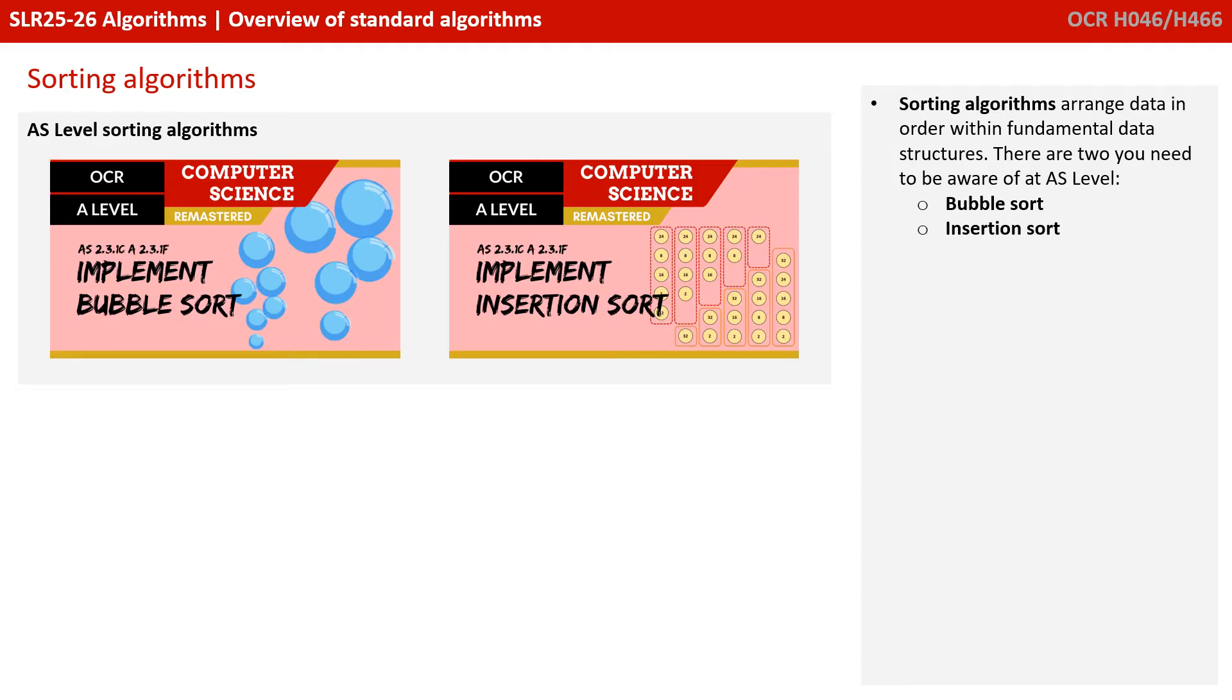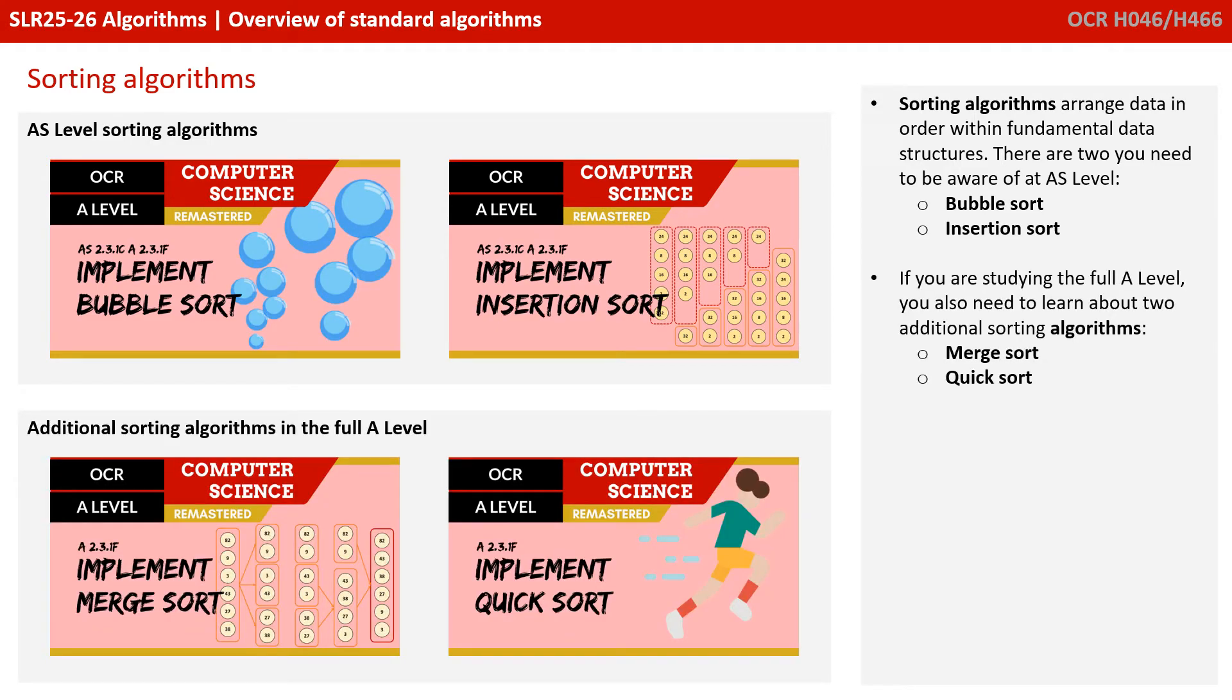Sorting algorithms arrange data in order with fundamental data structures. There are two you need to be aware of at the AS-level: the bubble sort and the insertion sort. If you're studying the full A-level, you also need to learn about two additional sorting algorithms, the merge sort and the quick sort.